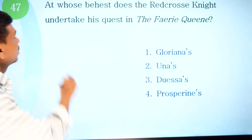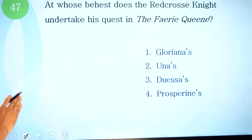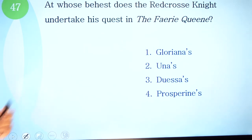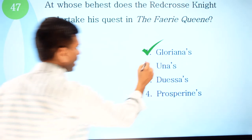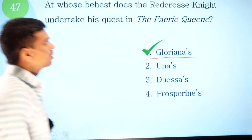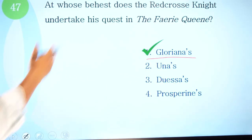Question 47: at whose behest does the Red Cross Knight undertake his quest in The Faerie Queene? Options: one, Gloriana's; two, Una's; three, Duessa's; four, Proserpina's. The correct option is number one — Gloriana's.